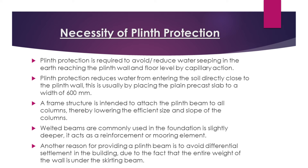Plinth protection is required to prevent water from seeping into the earth and reaching the plinth wall and floor level by capillary action. This is usually achieved by placing a plain precast slab to a width of 600 millimeters. A frame structure is intended to attach the plinth beam to all columns, thereby lowering the effective size and slope of the columns. Another reason for providing a plinth beam is to avoid differential settlement in the building, as the entire weight of the wall is carried under the plinth beam.